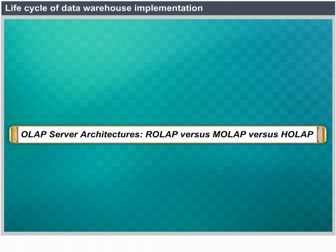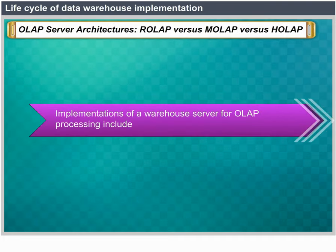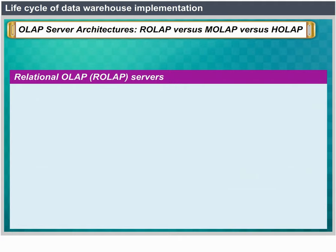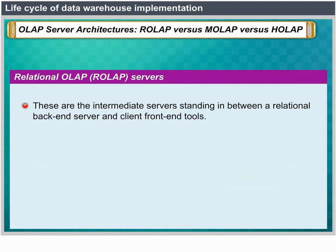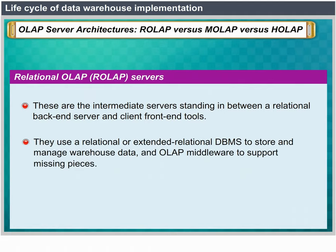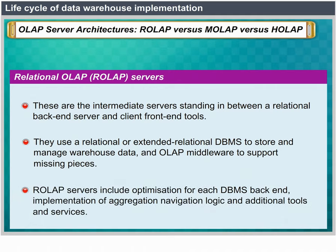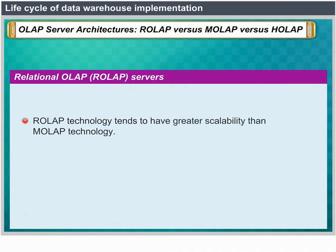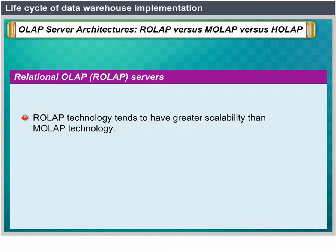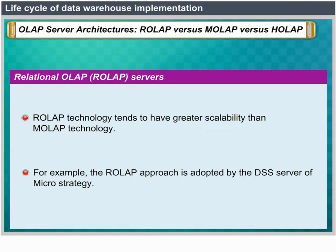OLAP server architectures — ROLAP vs. MOLAP vs. HOLAP. Relational OLAP (ROLAP) servers are intermediate servers that stand between a relational back-end server and client front-end tools. They use a relational or extended relational DBMS to store and manage warehouse data, and OLAP middleware to support missing pieces. ROLAP servers include optimization for each DBMS back-end, implementation of aggregation navigation logic and additional tools and services. ROLAP technology tends to have greater scalability than MOLAP technology; the DSS server of MicroStrategy, for example, adopts the ROLAP approach.